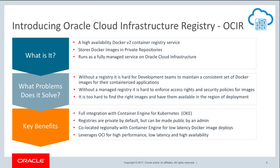Within the OCIR service, you can use it as a private Docker registry for internal use, pushing and pulling Docker images to and from the registry using the standard Docker v2 API and Docker CLI. You can also use it as a public Docker registry, enabling any user with Internet access to pull images from public repositories in OCI. The OCI registry is integrated with IAM, providing easy authentication with native OCI identity.